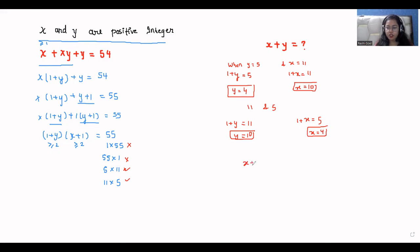So x plus y is 10 plus 4, which is 14. And in the second case, 4 plus 10 is also 14. In both cases, we find the sum of x and y is 14.